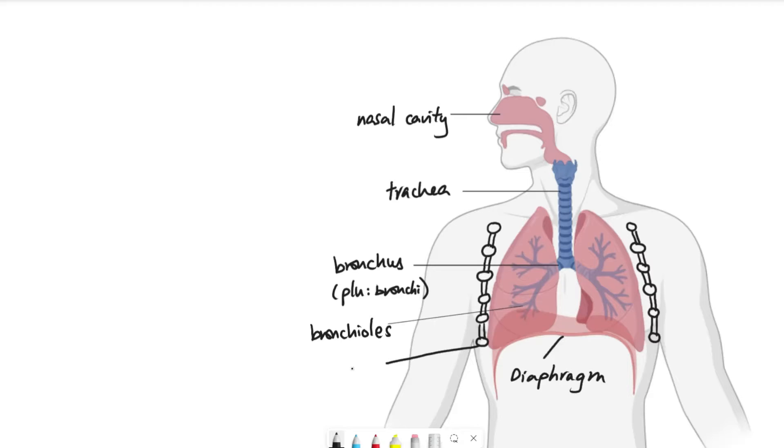We also have ribs, which form our rib cage that protects our lungs and the heart. And between the ribs, we also have something called the intercostal muscles. I'm going to color them in very quickly. So you can see the intercostal muscles basically hold the ribs together to form the rib cage. And the intercostal muscles again is another muscle that is essential in helping us to breathe.